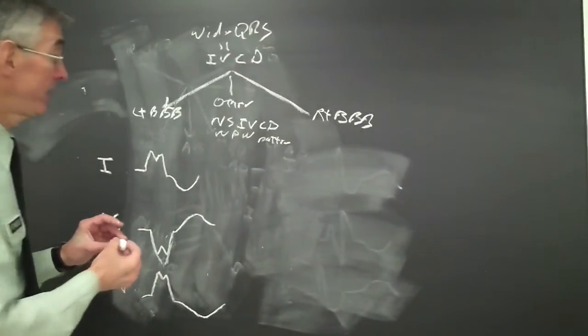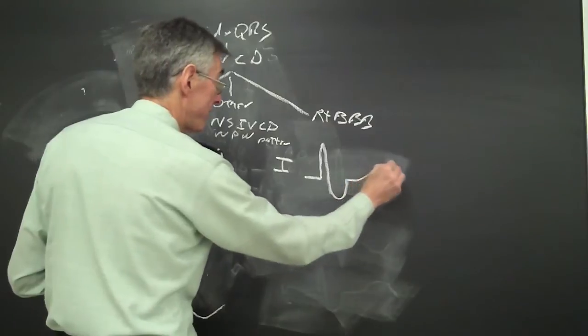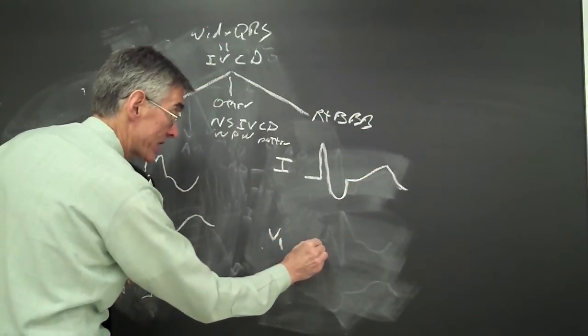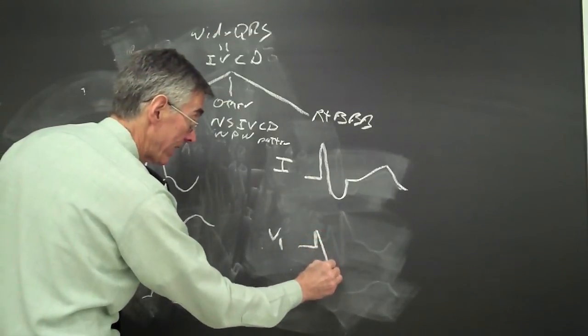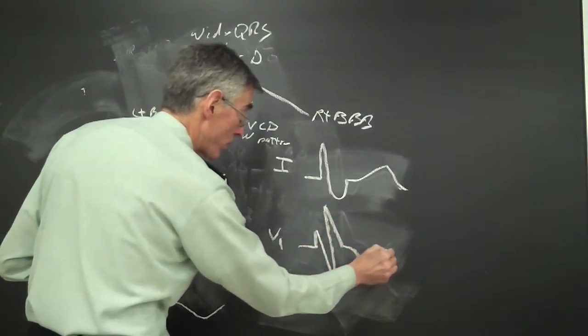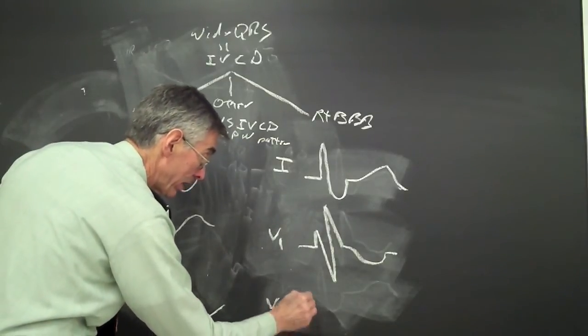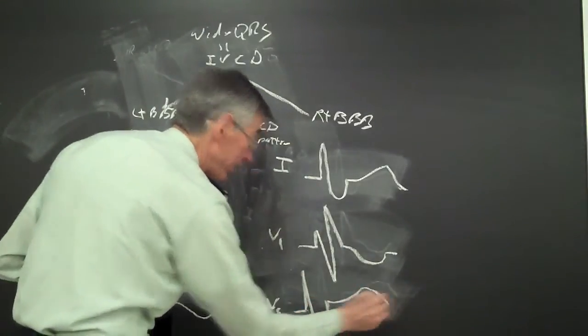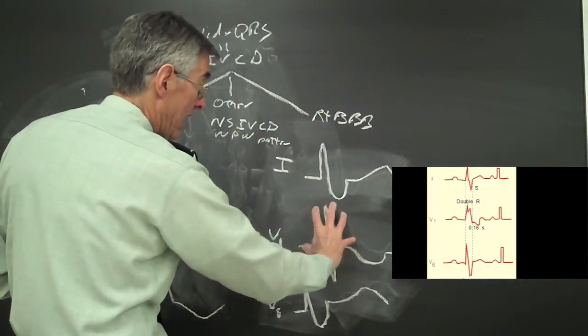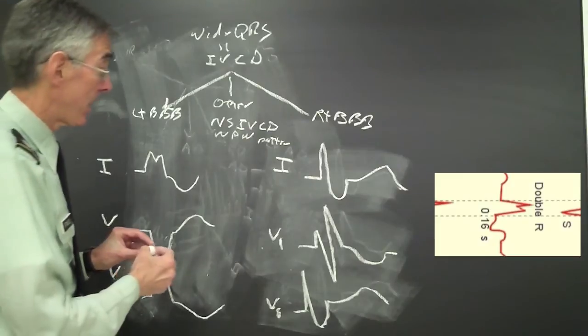For right bundle branch block, I look at lead one, which should give a deep S wave. I look at lead V1, in which I see septal depolarization and R wave. Then an S and an R prime, discordant T wave. And then in V6, I look for an S wave like this. If you take lead V1 and you rotate it 90 degrees, the bulk of the QRS will go to the right, implying right bundle branch block.